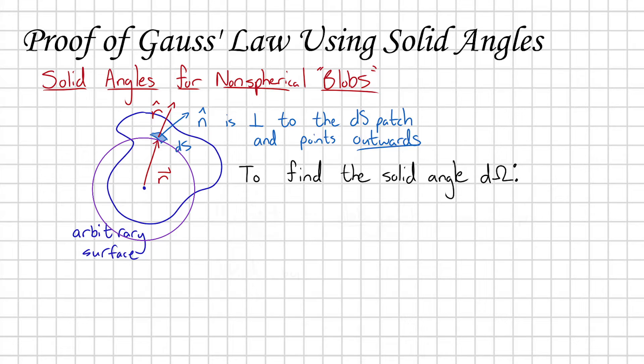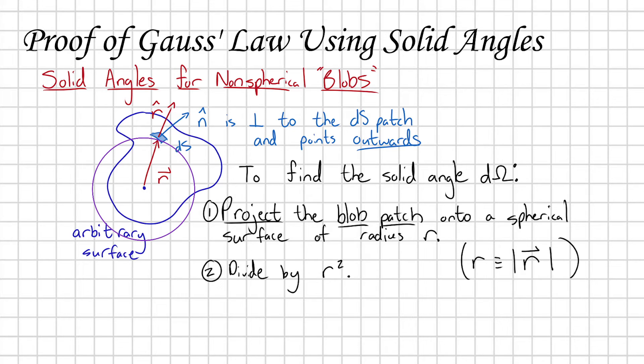There's going to be some contribution of this dS patch that points along the surface of that sphere. We first need to find that contribution by projecting the dS patch onto this sphere of radius r. And then, once we've done that, we simply divide through by r squared.